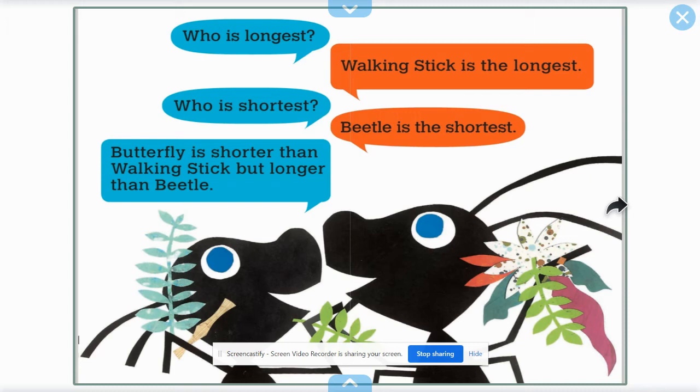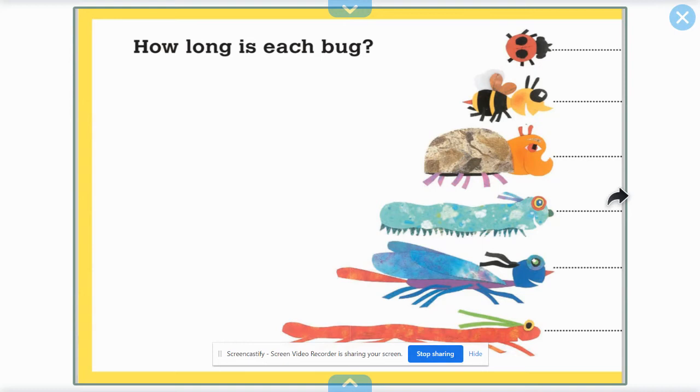Who is the longest? Walking stick is the longest. Who is the shortest? Beetle is the shortest. Butterfly is shorter than walking stick, but longer than beetle.